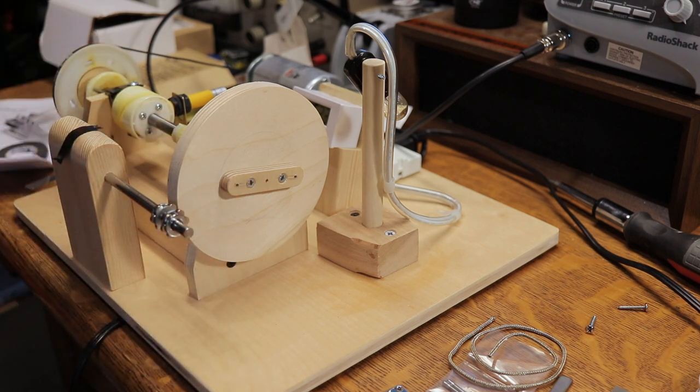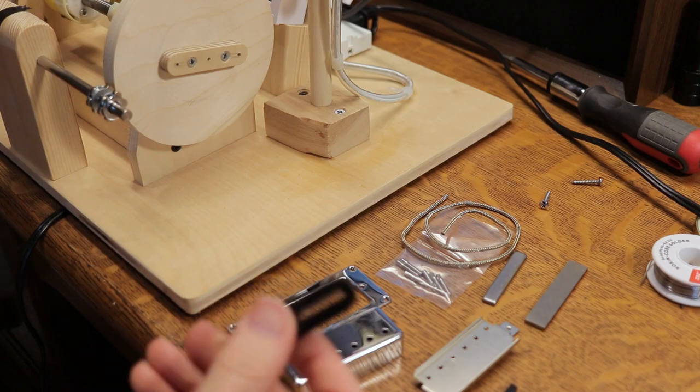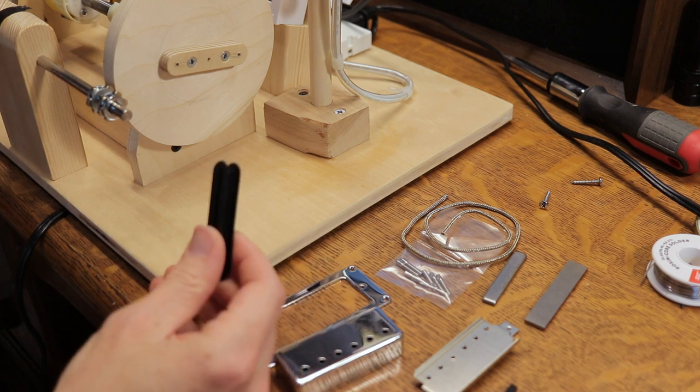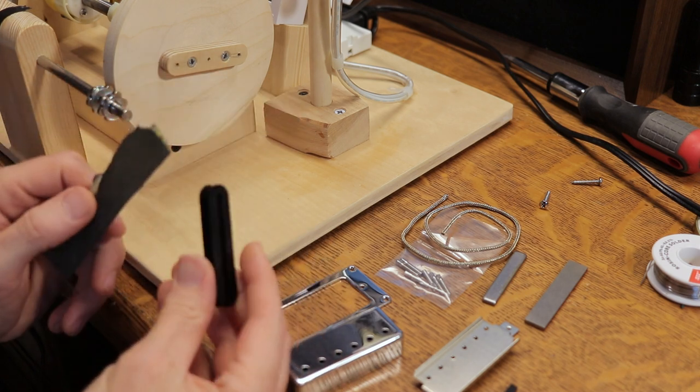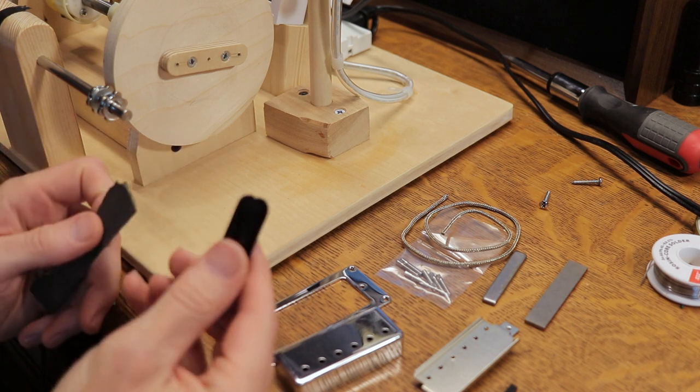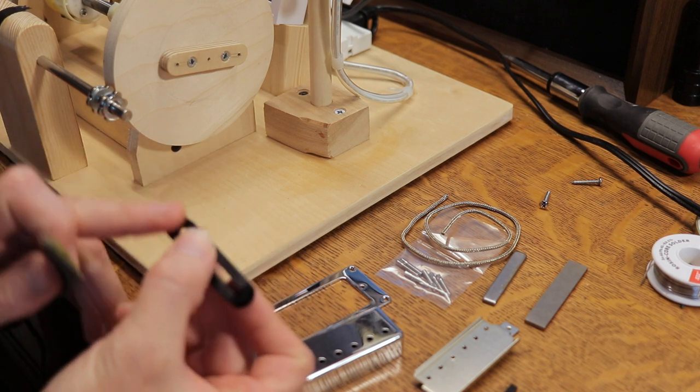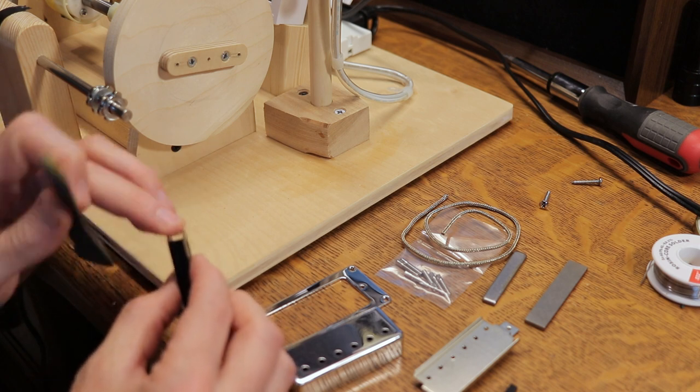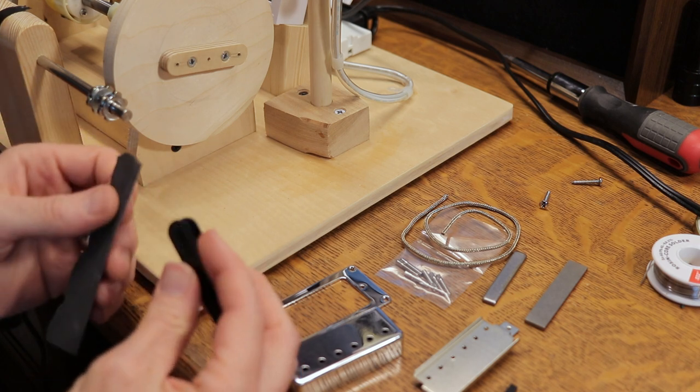The first thing we need to do is just take our bobbin and some 600 grit sandpaper and just clean up any of those little weird sharp nub sections that come from the mold when they make it, because we don't want anything that's going to catch the wire and potentially break it.